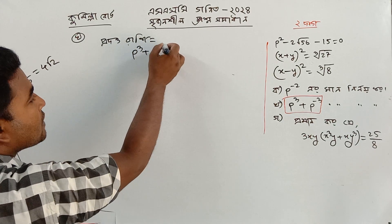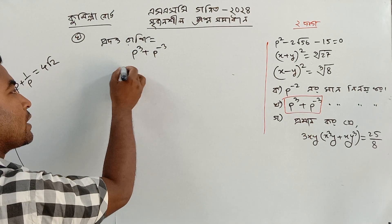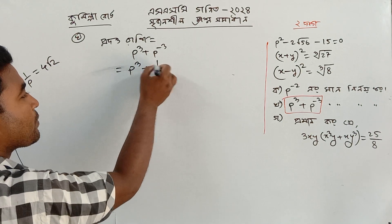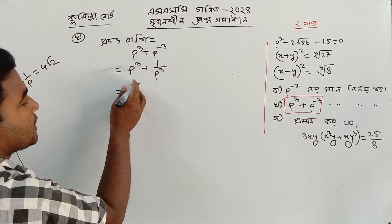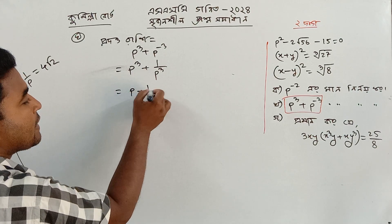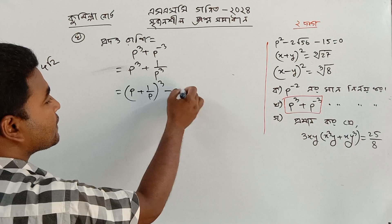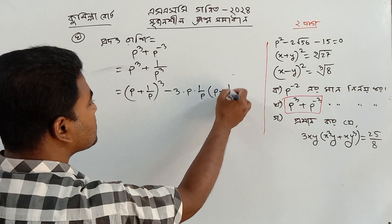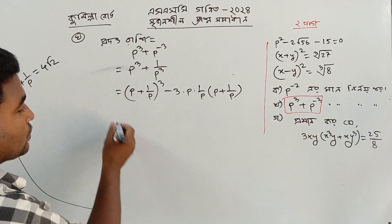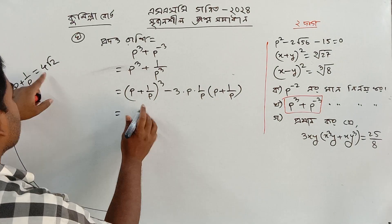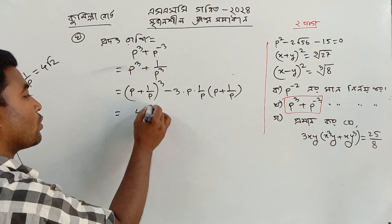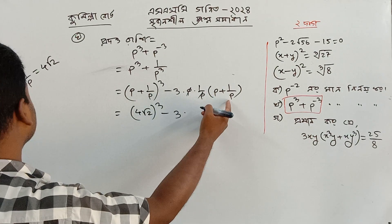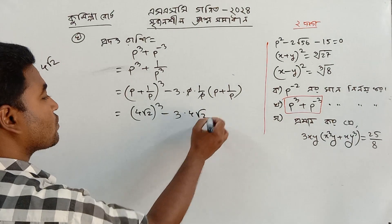p cubed plus 1 by p cubed equal to the formula: a cubed plus b cubed is a plus b whole cube minus 3ab into a plus b. So: p plus a by p equals 4 root 2, and p minus a by p equals 4 root 2.